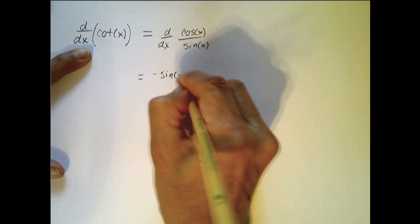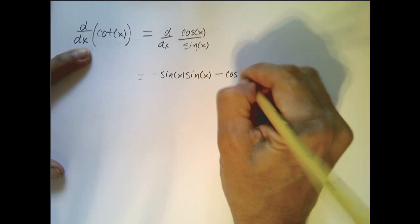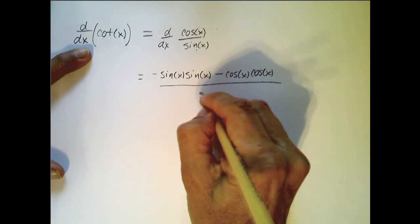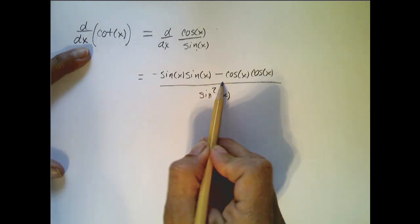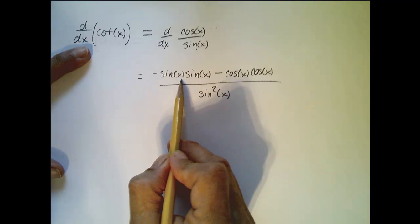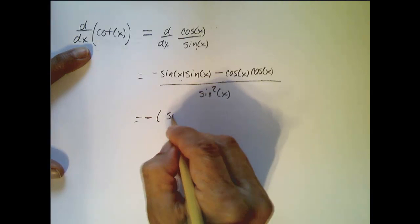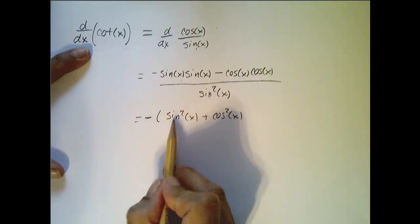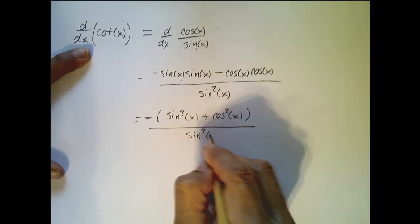This is equal to the derivative of the top, which is negative sine, times the bottom, minus the top times the derivative of the bottom — all over the bottom squared. Now I want to simplify the top like I did before, and I'm first going to factor out that minus and then rewrite this as sine squared and cosine squared.